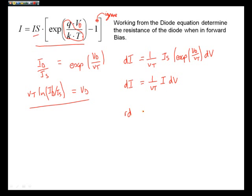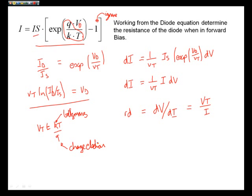So now if we just want to know what RD is, RD is equal to DV by DI, which now we've found is equal to VT over I. Do you remember, we put in a few approximations here. VT was equal to KT over Q. K Boltzmann's constant, Q charge on an electron, and of course T is temperature in Kelvin. Those are our three terms.